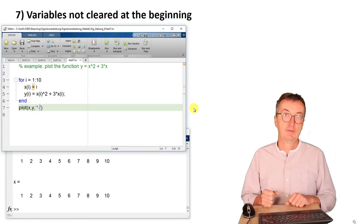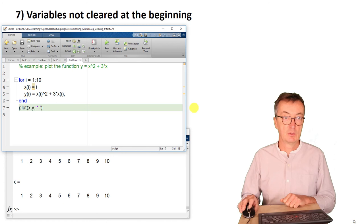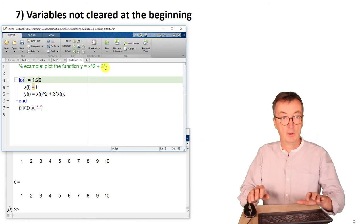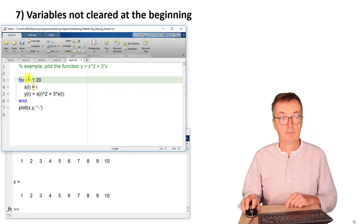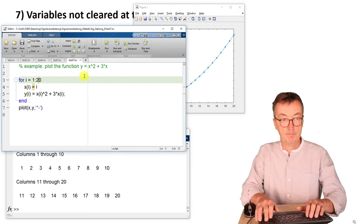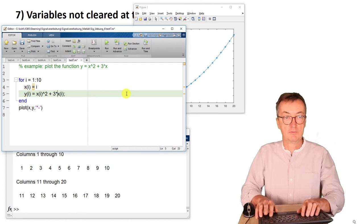Another problem is that the variables are not cleared at the start of a program. Let's have a look here. Let's say we would like first to plot this function again for values of x from 1 to 20 and we run that. And after that, we would like to change it just to x to i from 1 to 10 and would like to plot a different function.